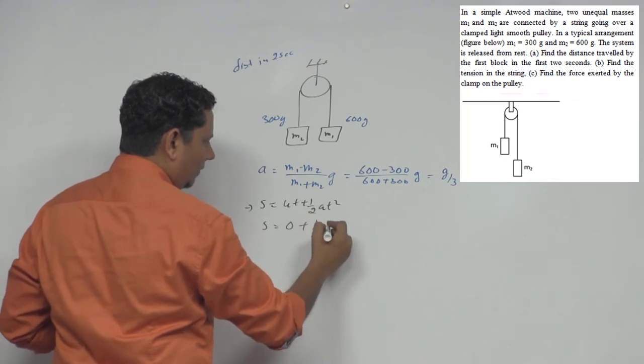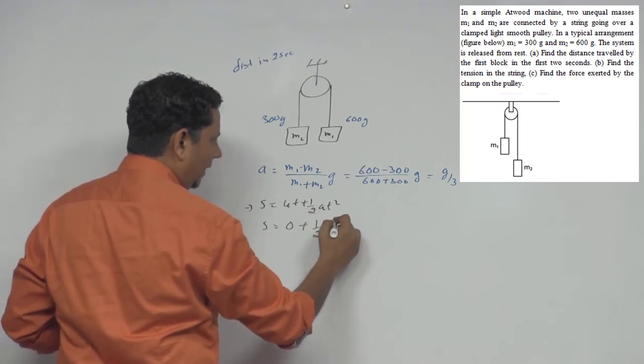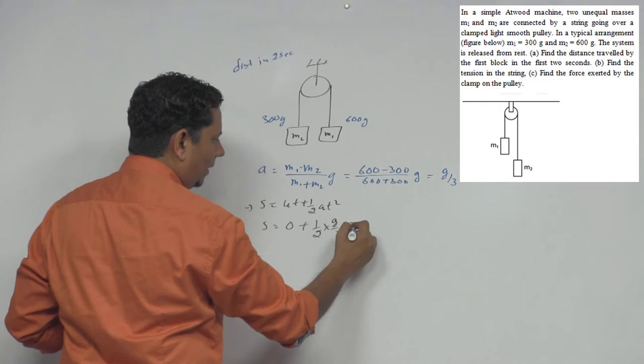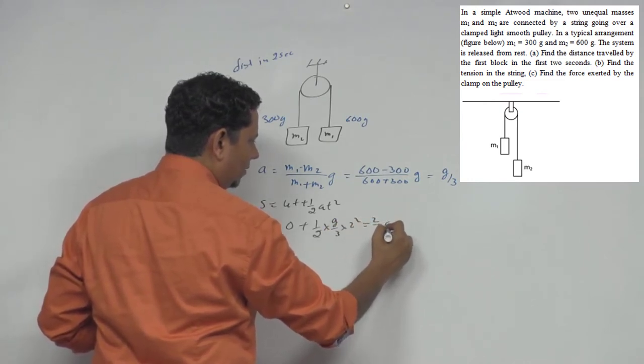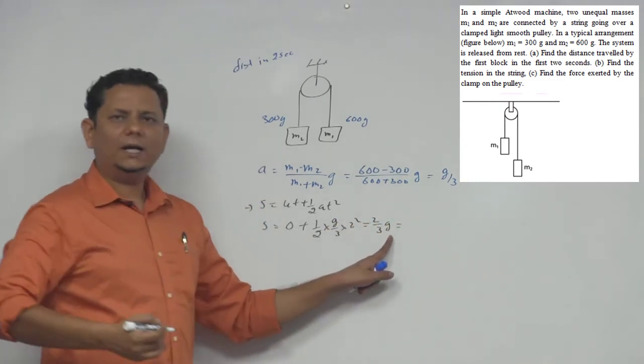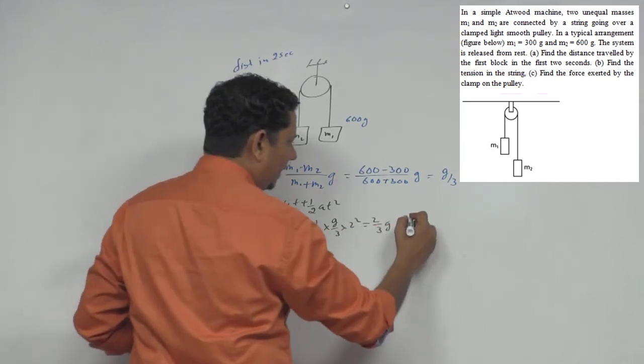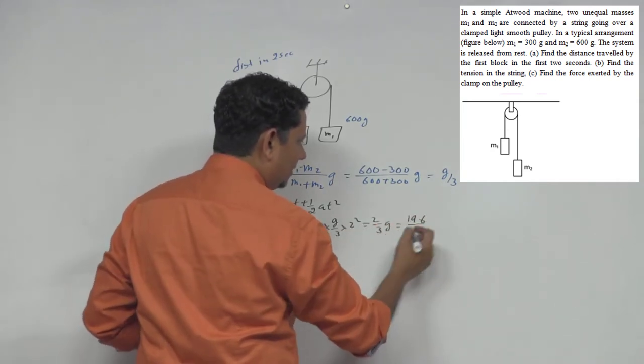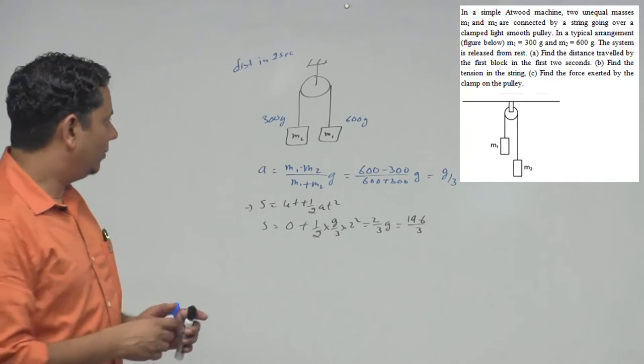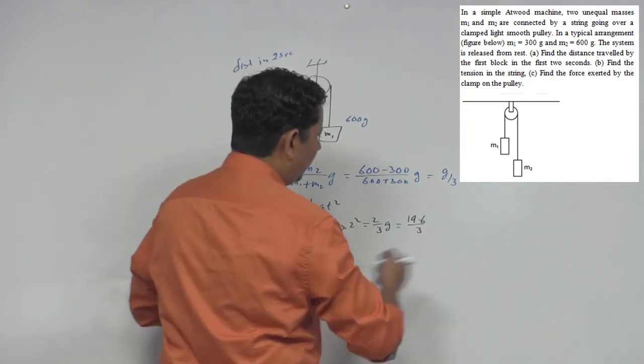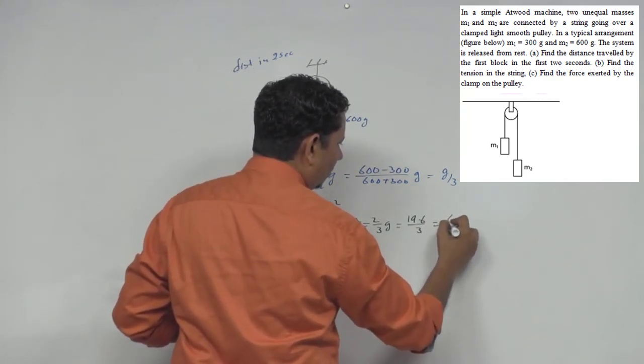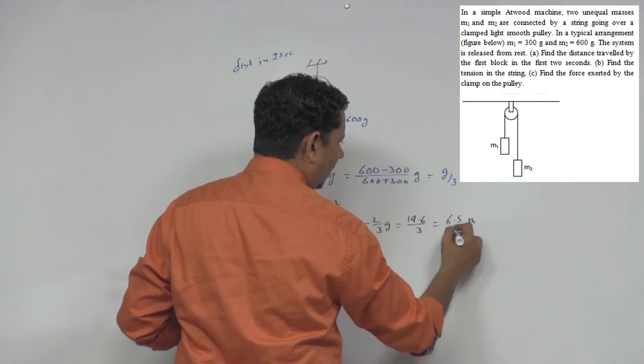Putting the values - u is zero, half multiplied by g by 3 multiplied by 2 squared. Taking g value as 9.8, this will be equal to almost 6.5 meters distance.